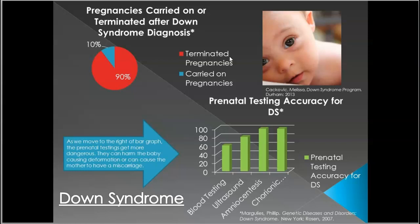That's one piece of data the student found. The other has to do with testing, and this was very important context the student provided. As we move to the right of the bar graph, the prenatal testings get more dangerous — they can harm the baby, causing deformation, or can cause the mother to have a miscarriage. Blood testing, drawing blood from the mother's arm, isn't really dangerous to a child in utero; however, the accuracy for Down syndrome diagnosis is less than 60%, so it's only about half right.